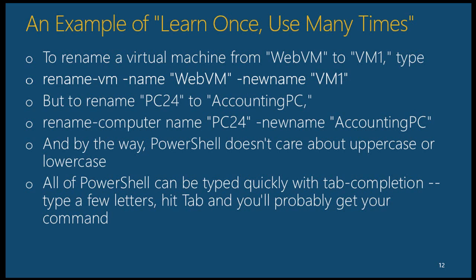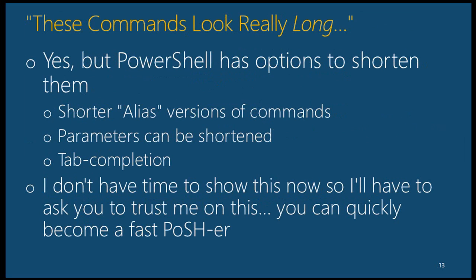If commands look long, PowerShell supports tab completion — just type a few letters and hit Tab to cycle through options. You could even type 'get-' and hit Tab repeatedly to see all Get commands in sequence; Shift+Tab goes back. There's also the notion of aliases, where longer commands have shorter names — for example, 'get-command' has an alias of GCM. Parameters can also be shortened as long as they're unambiguous: 'dash-name' and 'dash-newname' can't both shorten to 'dash-n,' but you could use 'dash-na' and 'dash-ne.'